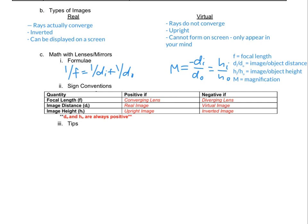Let's talk about sign conventions for these values. Do and Ho are always positive. The focal length F is positive for a converging lens and negative for a diverging lens. Di is positive for a real image and negative for a virtual image. Hi is positive if the image is upright and negative if it is inverted. F, Di, and Hi all have specific sign conventions that we need to follow.